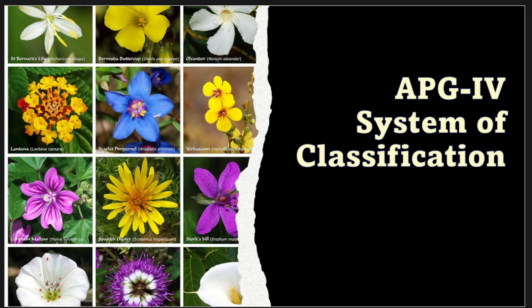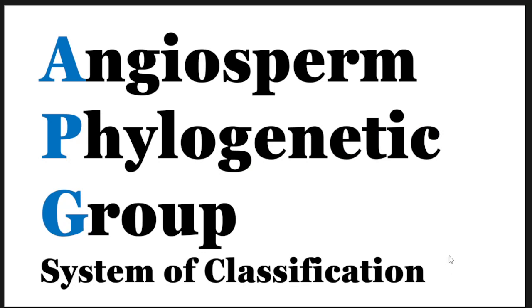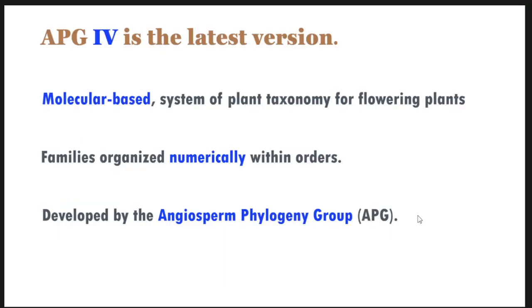Hello everyone. Today I will be dealing with the topic APG4 System of Classification. This is nothing but Angiosperm Phylogenetic Group System of Classification, and APG4 is the latest version. It is a molecular-based system of plant taxonomy for flowering plants, where families are organized numerically within the orders giving them a linear approach from 1 to 416 families. This is developed by the Angiosperm Phylogenetic Group.